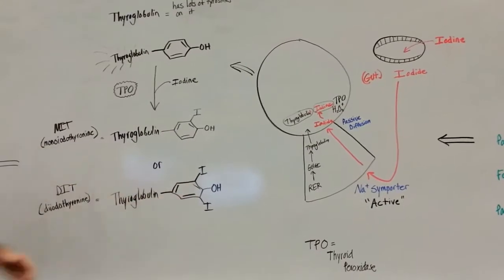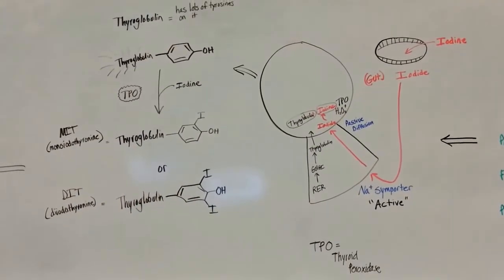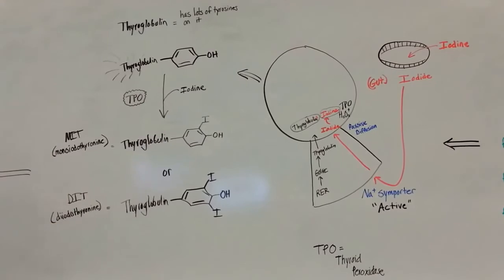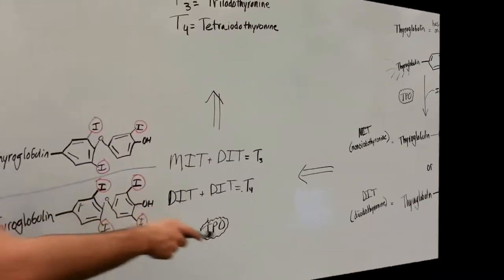Likewise, you can transfer two iodines onto your tyrosine, just like so. And you get DIT, diiodothyronine.